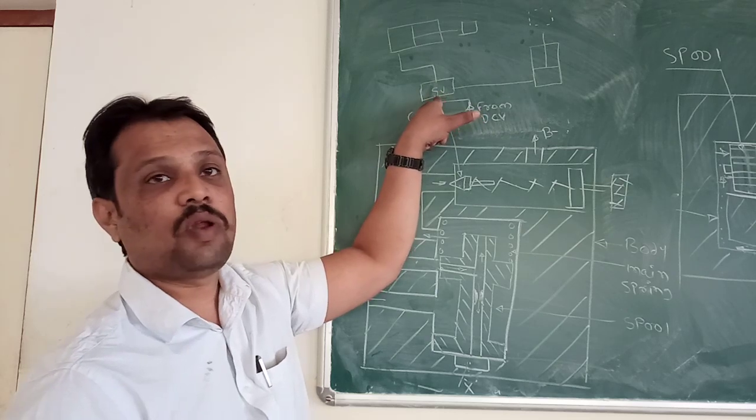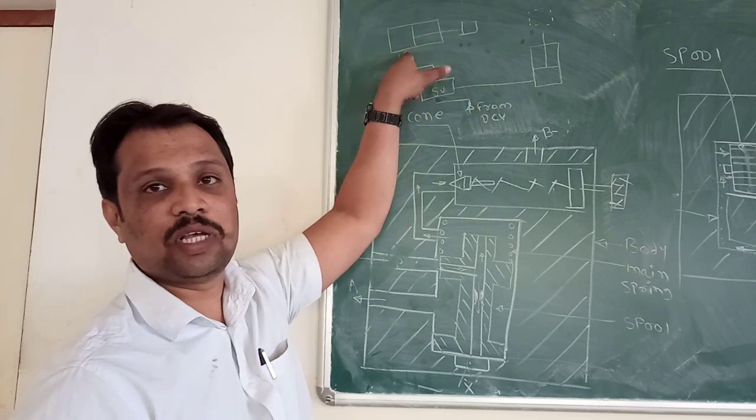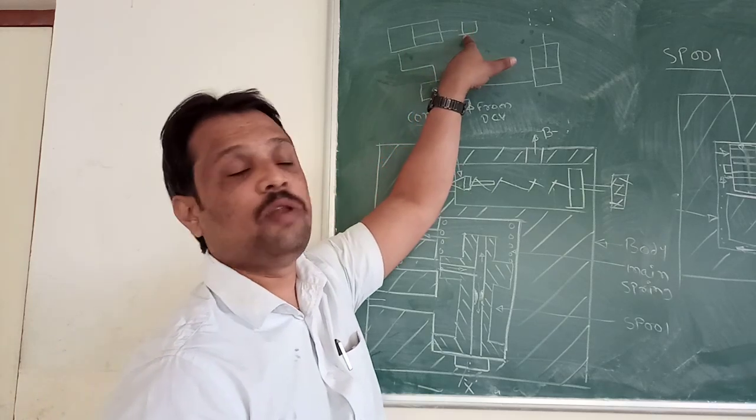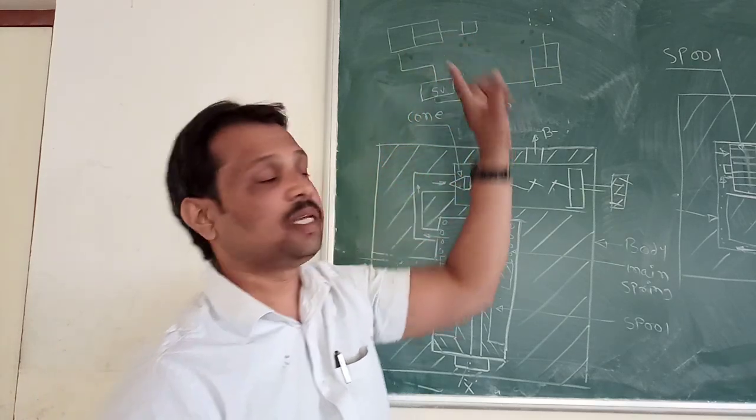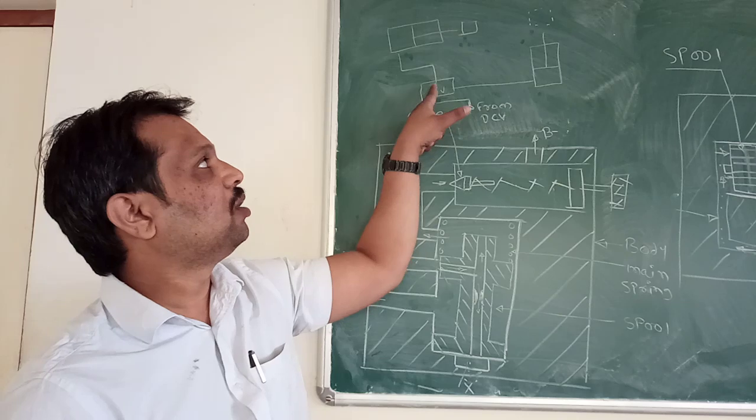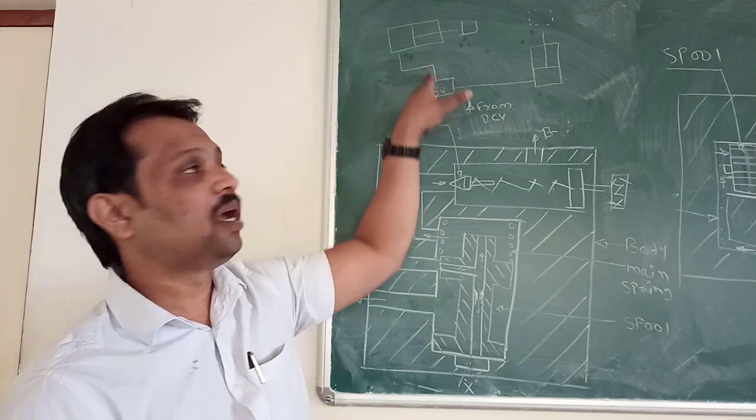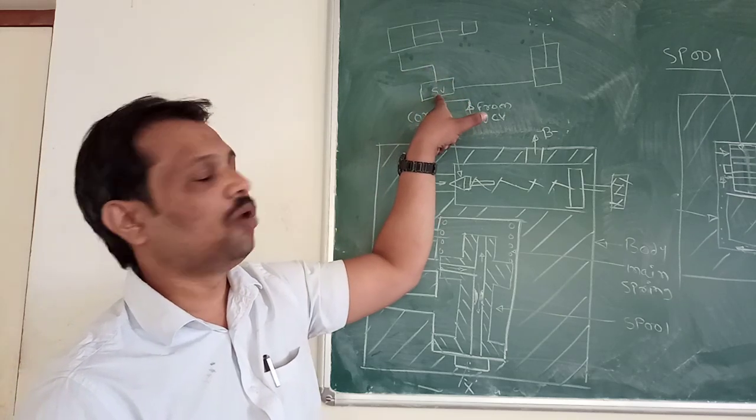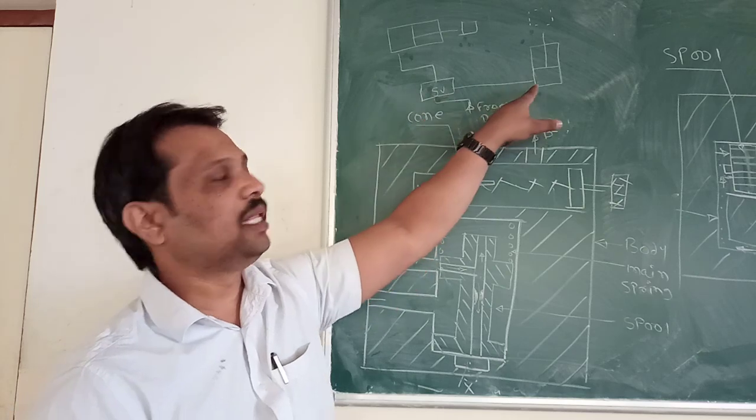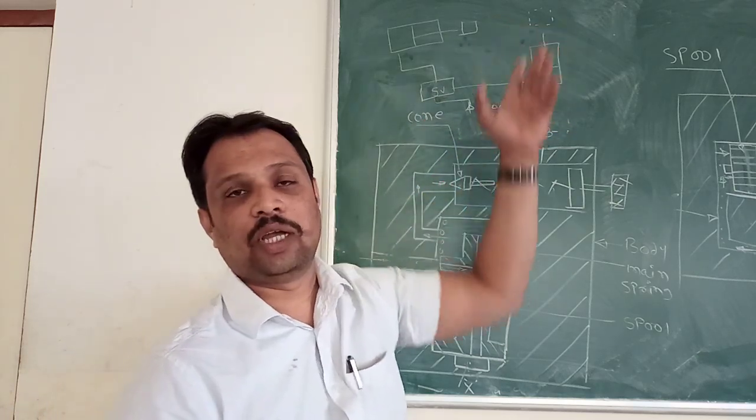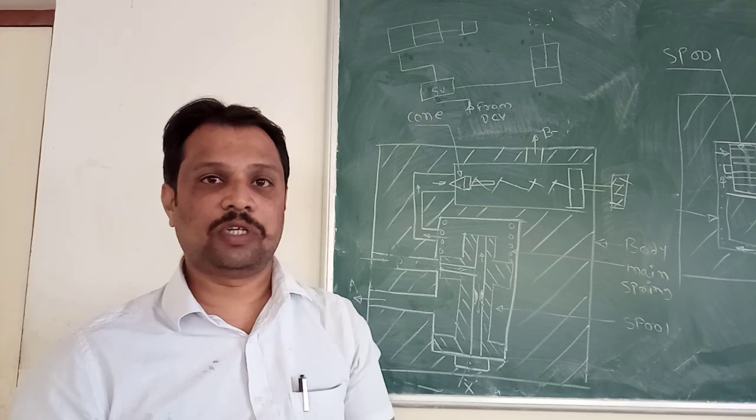From the sequence valve, oil goes to the first actuator. After that, your workpiece will move from this place to this place. Then the sequence valve closes the oil supply to this and starts giving oil to the second actuator. The actuator goes upwards and your sequencing operation is performed.